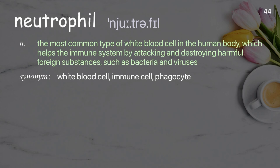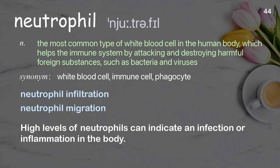Neutrophil: the most common type of white blood cell in the human body, which helps the immune system by attacking and destroying harmful foreign substances such as bacteria and viruses. Examples: neutrophil infiltration, neutrophil migration. High levels of neutrophils can indicate an infection or inflammation in the body.